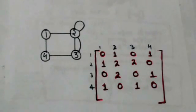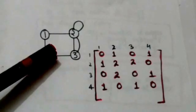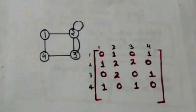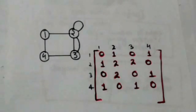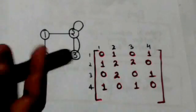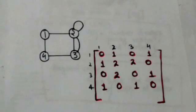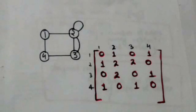The adjacency matrix of this graph is this matrix. Since there are four vertices in this graph, the adjacency matrix is a four-cross-four matrix.